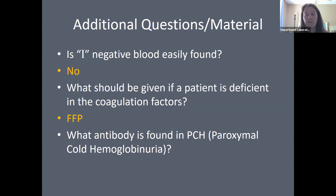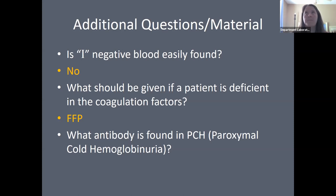Do not confuse paroxysmal cold hemoglobinuria (PCH) with paroxysmal nocturnal hemoglobinuria (PNH) from hematology, where patient cells lack CD55 and CD58, making them susceptible to lysis by complement. These are two different conditions. PCH is associated with anti-P, the Donath-Landsteiner biphasic hemolysin.